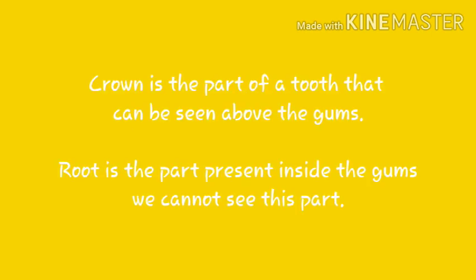Now, parts of a tooth. Each tooth is divided into two parts: crown and root. The crown is the part of the tooth that can be seen above the gums. The root is the part present inside the gums — we cannot see this part.